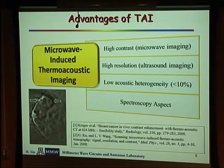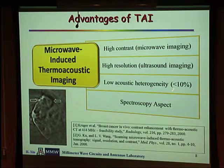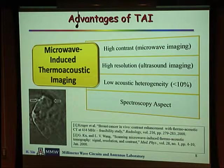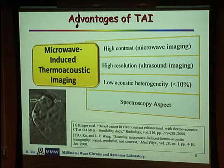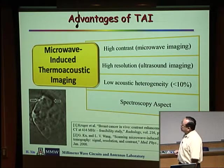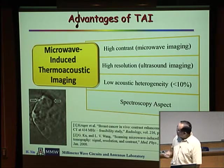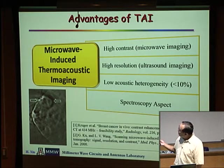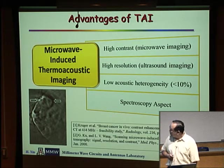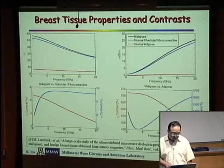We can easily go to millimeter or even sub-millimeter resolution. Regarding the scattering problem, for biological tissue the acoustic heterogeneity is much less — within 10% — whereas the microwave heterogeneity can be up to 1,000% or more. So at least in one direction, on the return path, the scattering problem is much better. There's also a spectroscopy aspect: we've done lots of study looking at different microwave frequencies, doing not only imaging but also spectroscopy — I'll show some results on that if I have time.